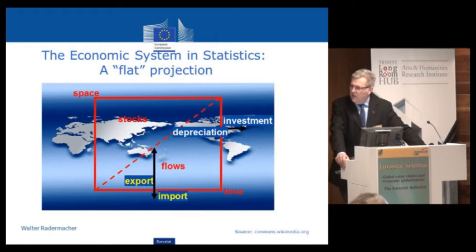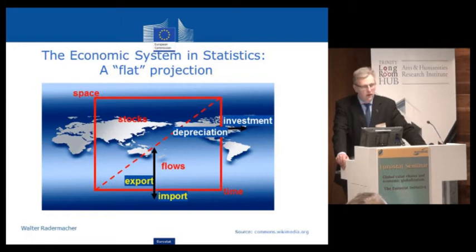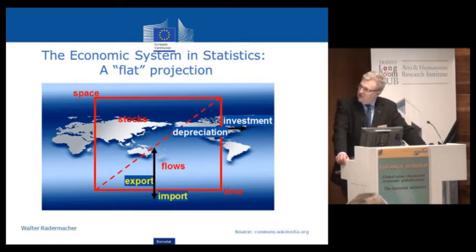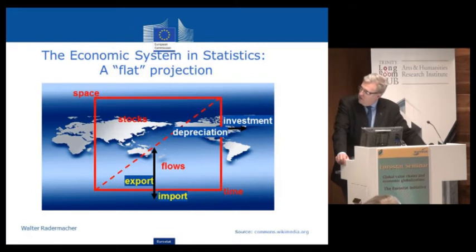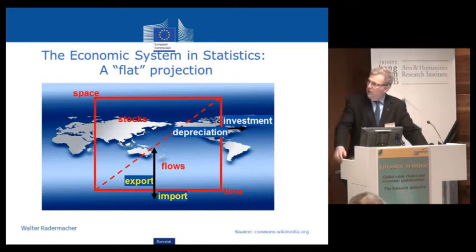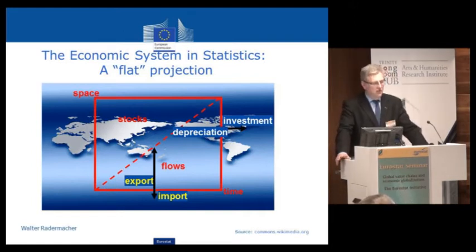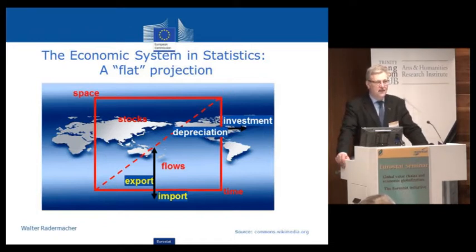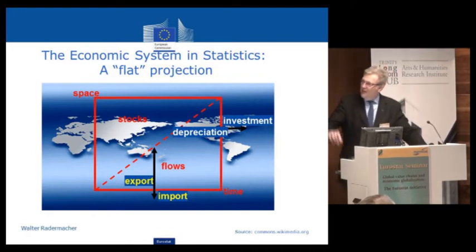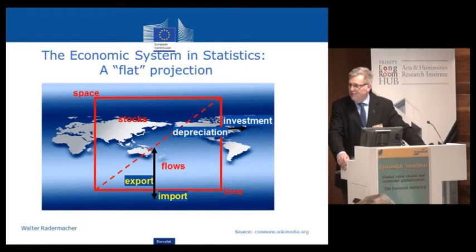The system that we mirror in our tables is a rectangular system based on one period in one nation, basically. National accounts have, of course, stocks and flows. And we adjust this rectangle time-wise to take into account cross-time flows, which is depreciation and investment, and cross-border flows by exports and imports. It's as simple as that. This is national accounts. But of course, the SNA 2010 is a book like this, so even a rectangular flat projection can be quite complicated.